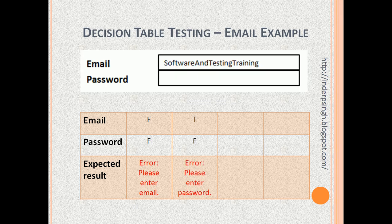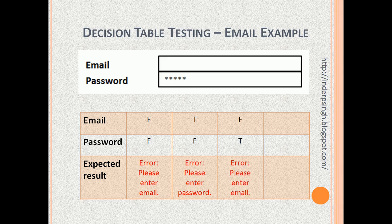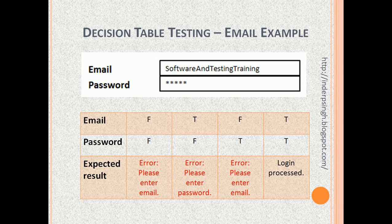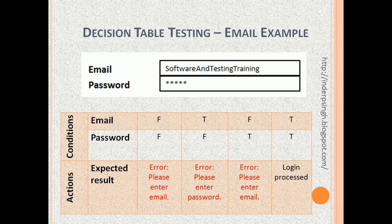There is another possibility: we give the email but don't give the password. So email is true, password is false, and here we get the error: please enter the password. Another possibility is we don't give the email but we give the password, and the error is: please enter the email. Finally, the possibility is that we give both the email and the password, and depending on whether valid or invalid email and password has been given, the login process will take place. So there are four possible condition entries. At the top we have the conditions: email condition, password condition, and actions. The single action is the expected result — whether we get an error or the login is processed.